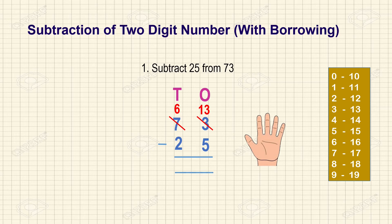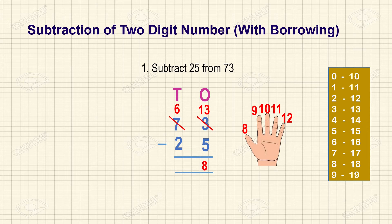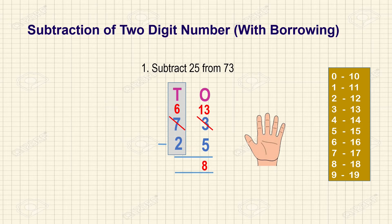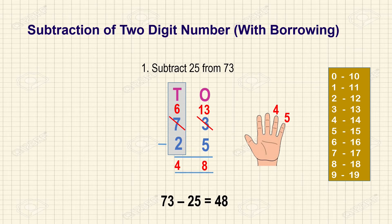Now we subtract: 13 minus 5. Keep 13 on our mind — before 13 is 12, 11, 10, 9, 8. So 13 minus 5 is 8. Next, keep 6 in mind for the tens value — before 6 is 5, 4. So 6 minus 2 is 4. Therefore 73 minus 25 is 48.